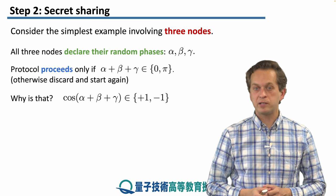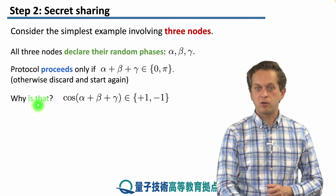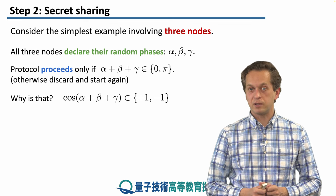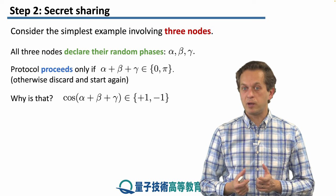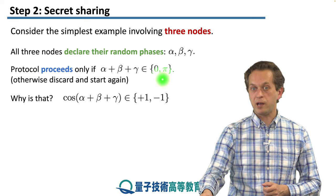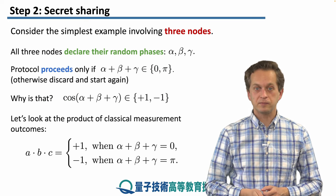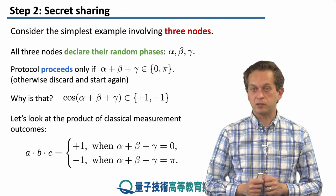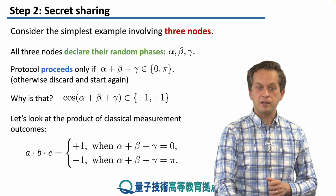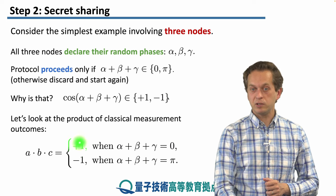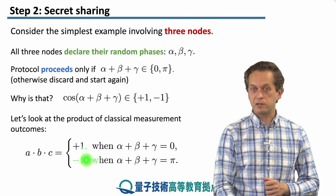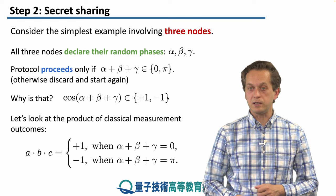Now, why this particular choice? That's because cosine of the sum of the phases, so cosine of α + β + γ, has to be equal to +1 or -1 by imposing that the sum is 0 or π. This tells us something about the product of the classical outcomes a, b, c. It means that a × b × c is equal to +1 when the sum of the phases is equal to 0, or it's equal to -1 when the sum of the phases is equal to π.